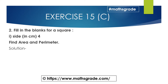Now we will solve question number two. Question number two is fill in the blanks. For a square, the side is given as 4 centimeters. We have to find the area and the perimeter of the square.